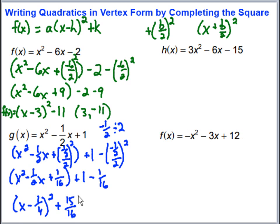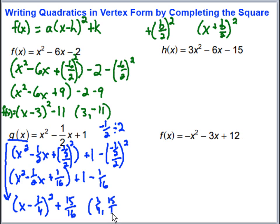This factors into x plus b over 2 squared. My b over 2 was negative one-fourth, so it factors into x minus one-fourth squared. Then outside we have one minus one-sixteenth, which is fifteen-sixteenths. So I can pick out my vertex, which in this case is one-fourth comma fifteen-sixteenths. Sometimes we do get fractions, but those are certainly valid.